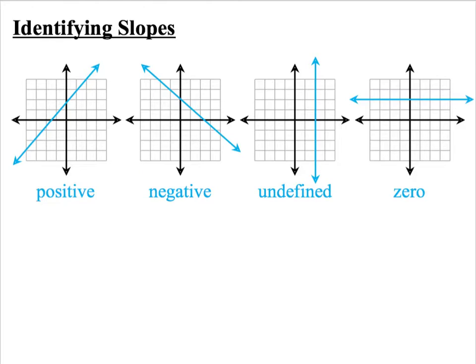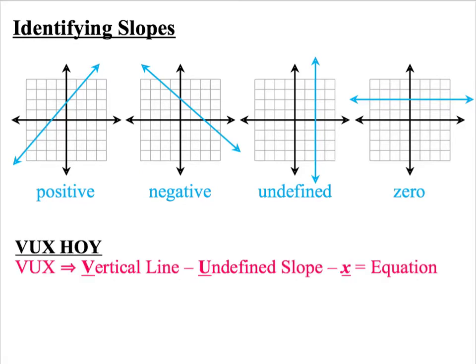The undefined and the zero slope are the two hardest to remember. So we have a funny VUX HOI that will help you remember which one is which. First we have the VUX. The V stands for vertical line, the U stands for undefined slope, and the X stands for an X equals equation.